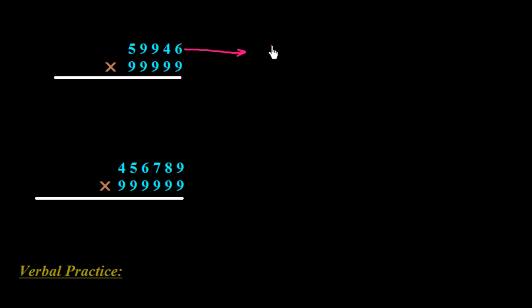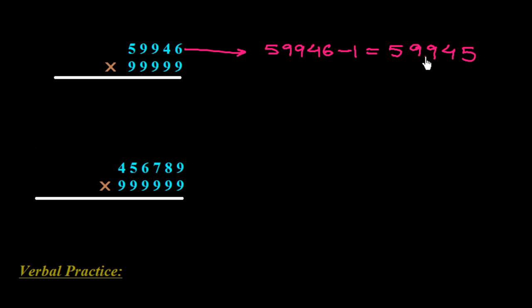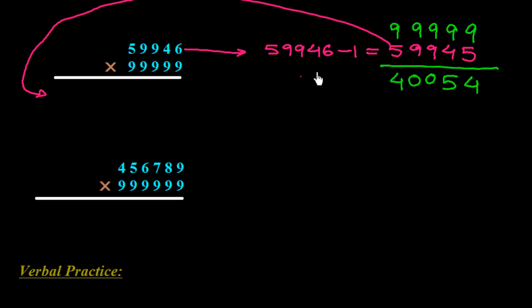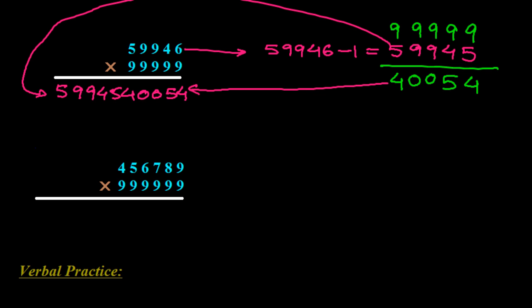For the 5-digit example, take 59946. Subtract 1 to get 59945, which goes on the left side. Now subtract 59945 from 99999. After the subtraction, we get 40054 on the right side. So the answer is 5994540054. In this way, we can write the multiplication of any such numbers using this technique.